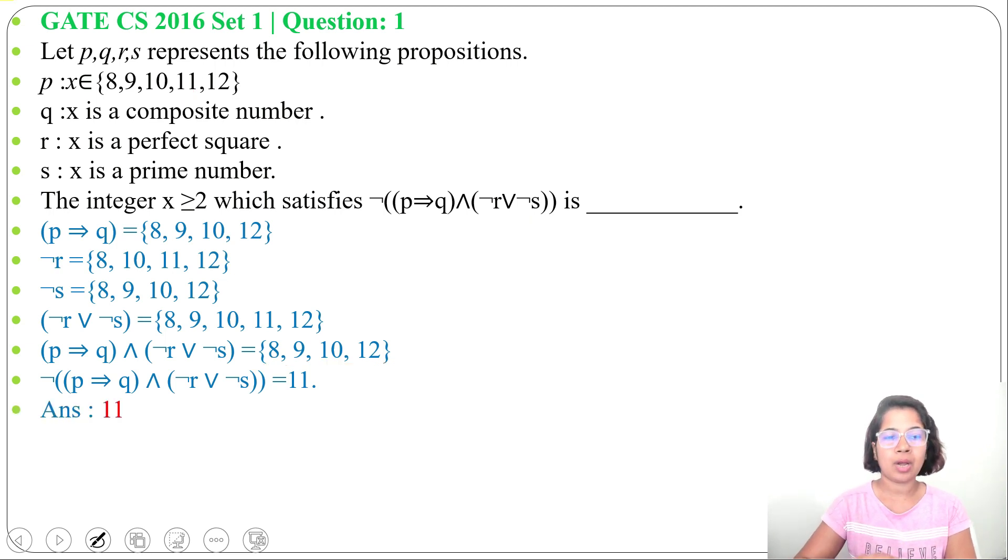Here P, Q, R, S are given. We just need to find (P⇒Q) ∧ (¬R ∨ ¬S), then its negation. So the answer is 11.